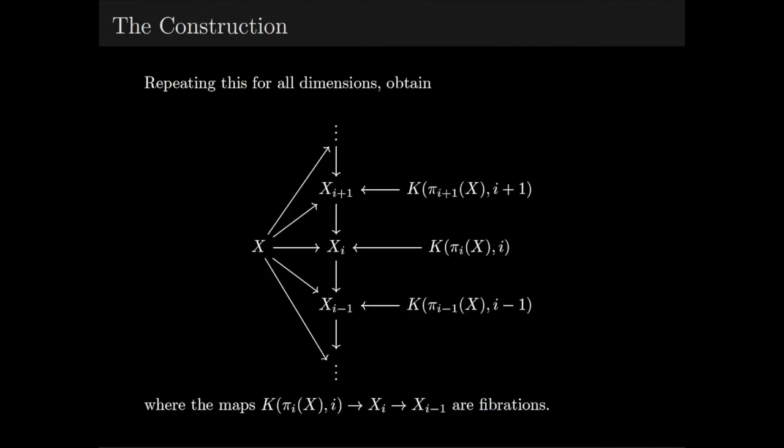Now, if we repeat this for every dimension, we obtain our tower. In this diagram, the map from X to X_i induces isomorphisms on homotopy groups in dimensions at most i. Furthermore, the map from X_i to X_{i-1} can be replaced by a fibration with fiber an Eilenberg-MacLane space.